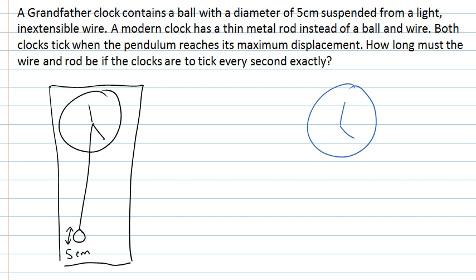On the modern clock, instead of a ball and string, we have a thin rod instead. And both of these are swinging.